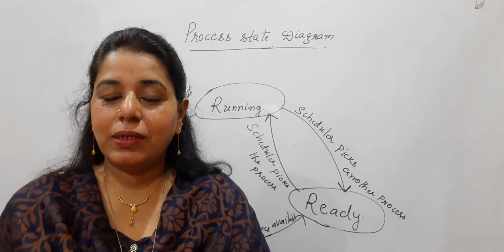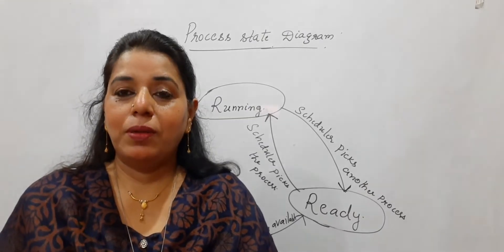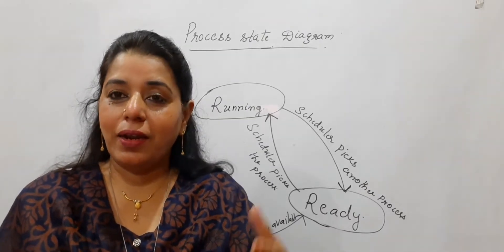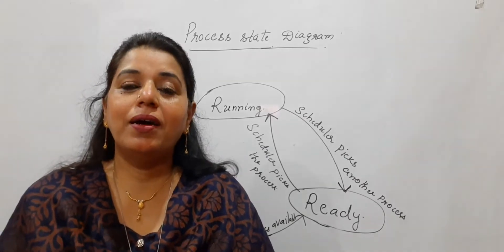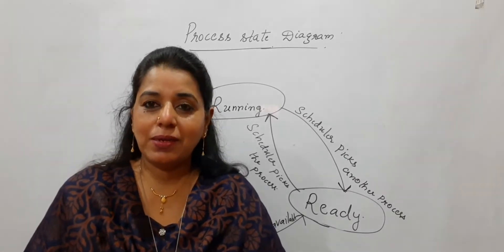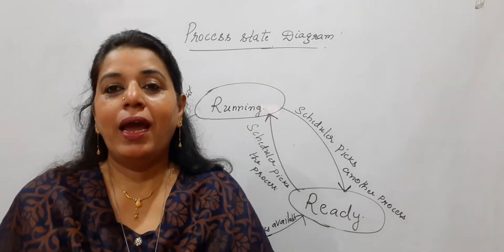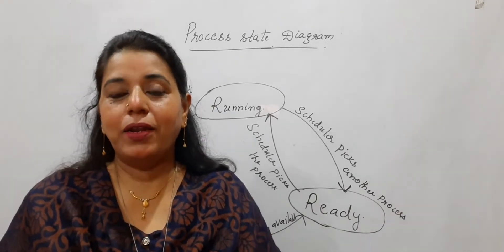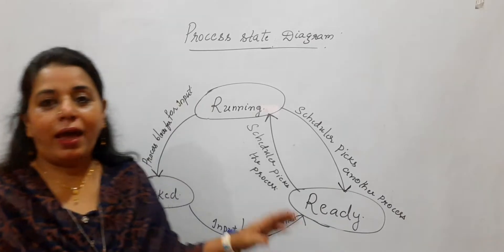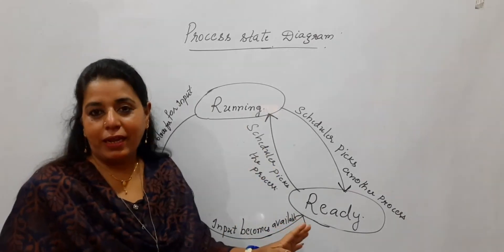A process will be in either the ready state, the block state, or the running state. That information will also be included in the PCB — that information was missed. Please include it in the attributes list. In continuation with the process state, you have to learn the complete process state diagram.